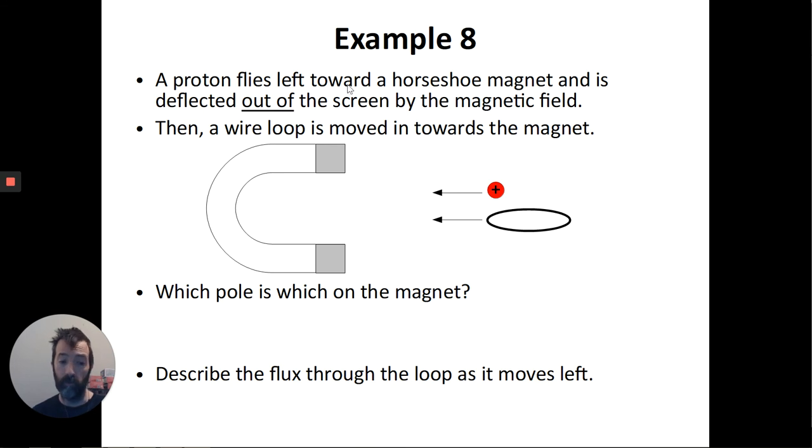And last one. I'll have to use the forces rule this time. I have a horseshoe magnet, but I don't know which pole is which. This proton flies towards the magnet. And as it says, the proton is deflected out of the screen by the magnetic field.